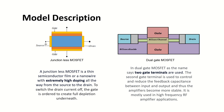Now we are going to look at the model description of the double gate MOSFET. In conventional devices, there is a JFET, that is, a junction field effect transistor, which is a semiconductor device used to amplify or switch electronic signals.